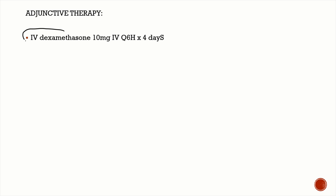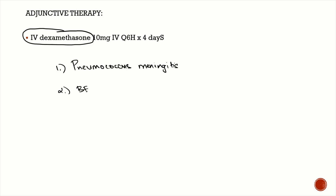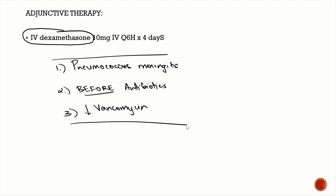Adjunctive therapy: IV steroids are essential — they reduce mortality, brain inflammation, and permanent neurological sequelae. Key points: maximum benefit is in pneumococcal meningitis; steroids must be given before antibiotics, approximately 20 minutes prior — never during or after. IV dexamethasone reduces CSF penetration of vancomycin. The standard dose is dexamethasone 10 mg IV every 6 hours for four days.